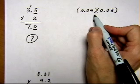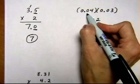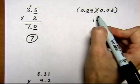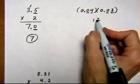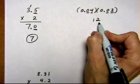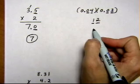And then I count up the decimal places that are in the multiplying numbers, which is 2 places here and 2 places here. So I need 4 decimal places in my final answer. Here are 2.